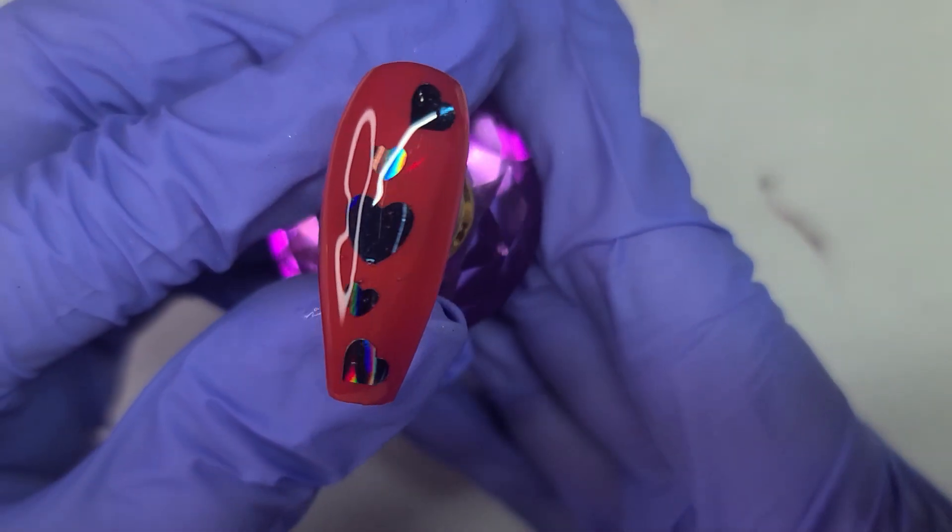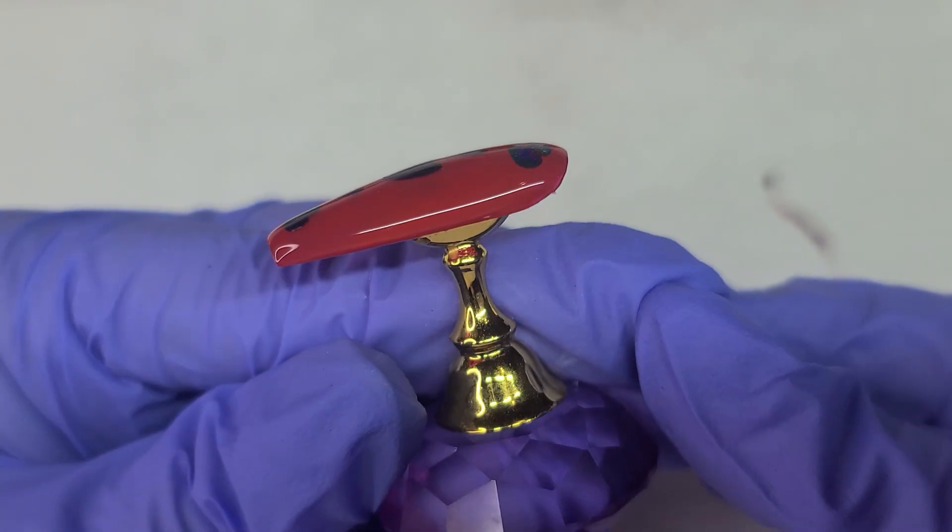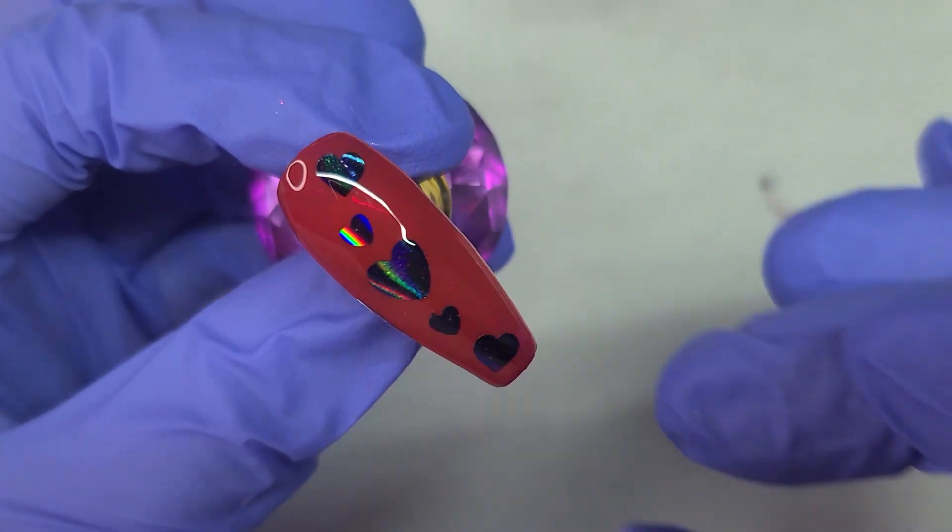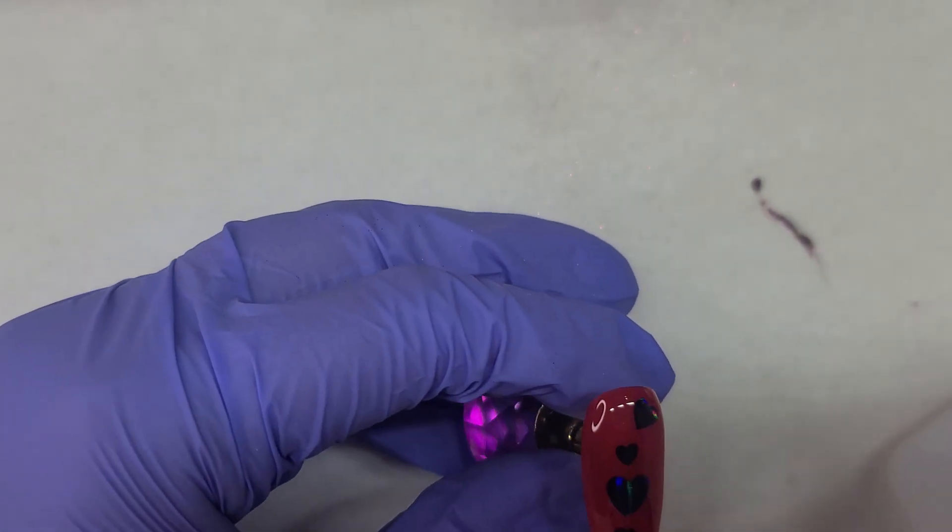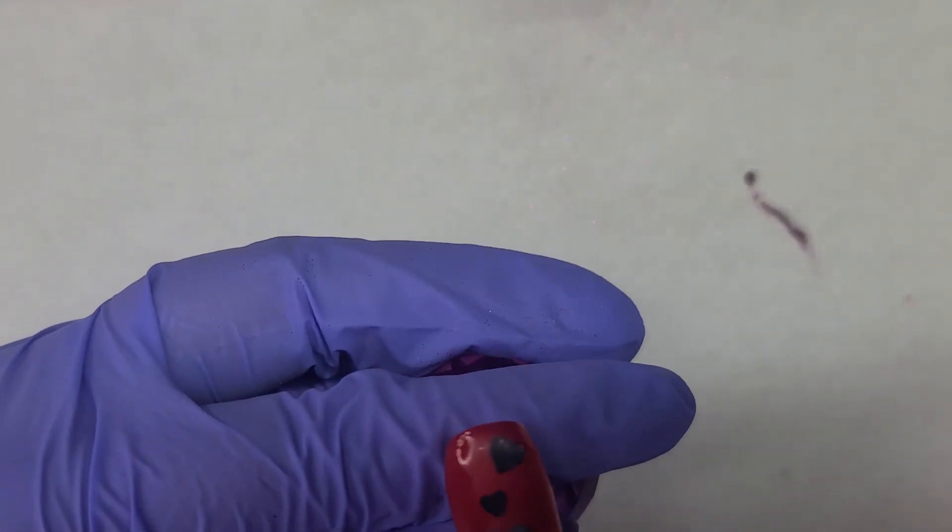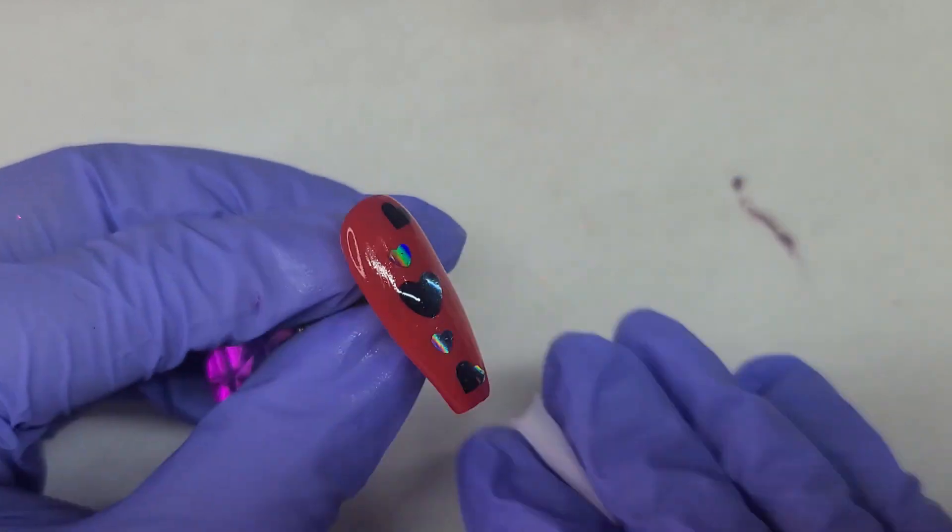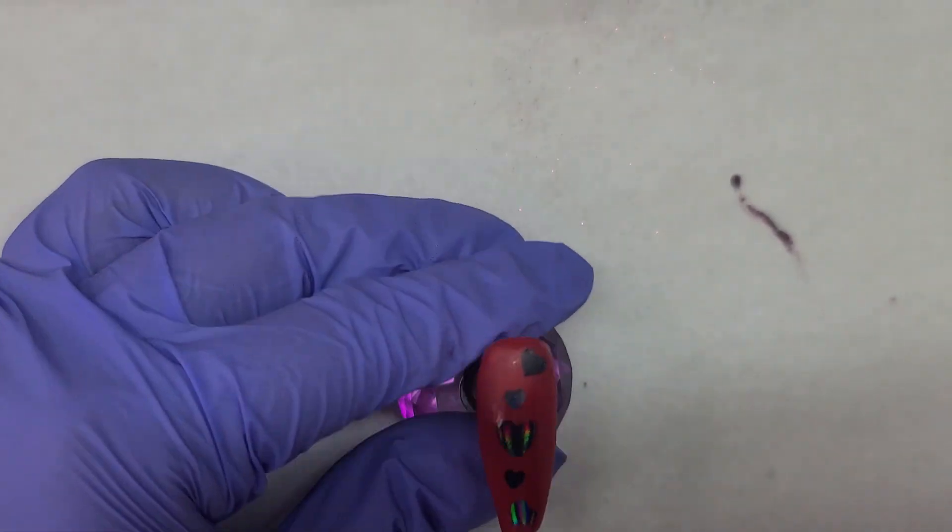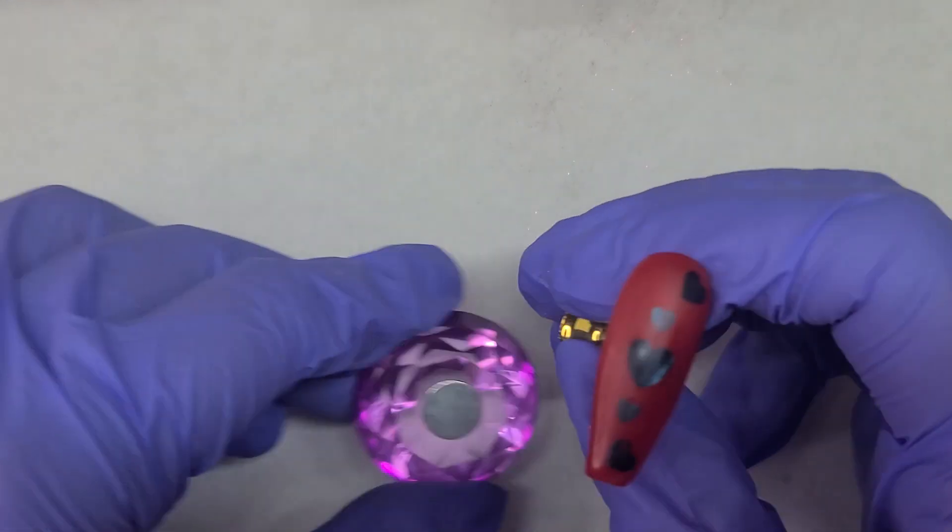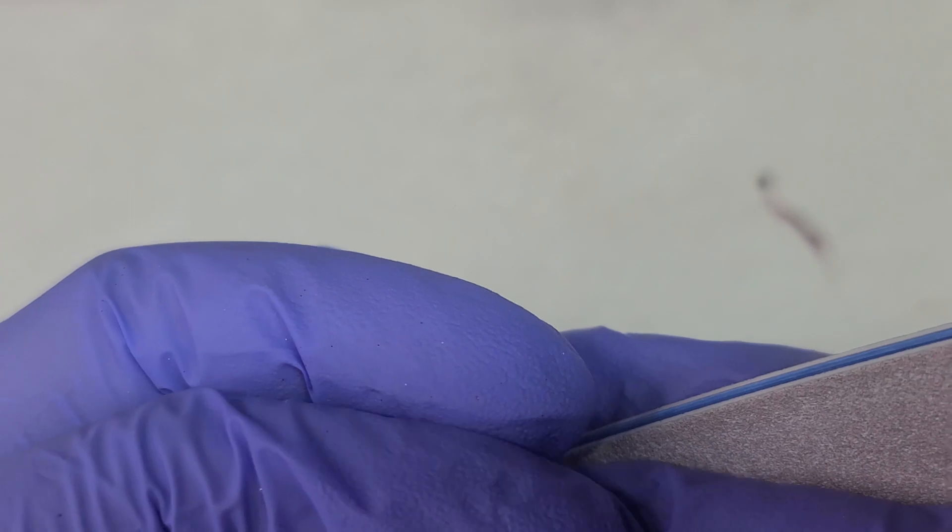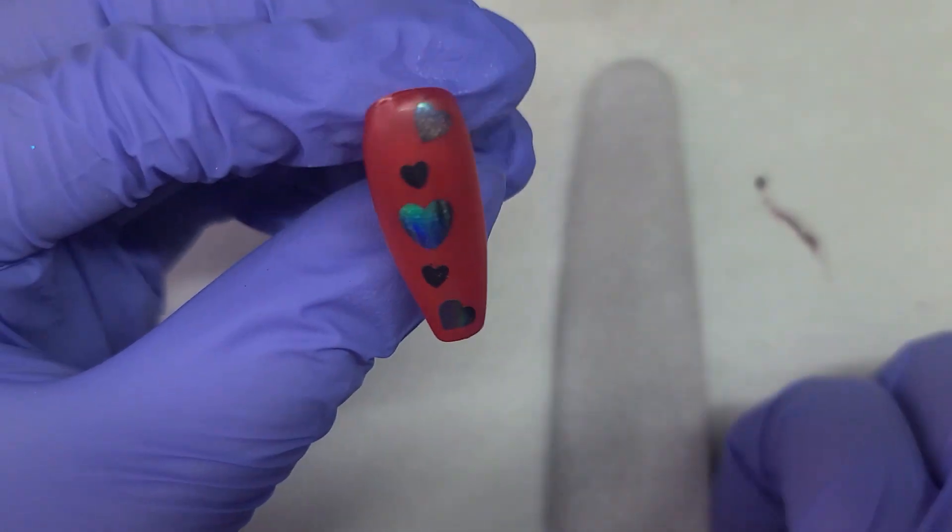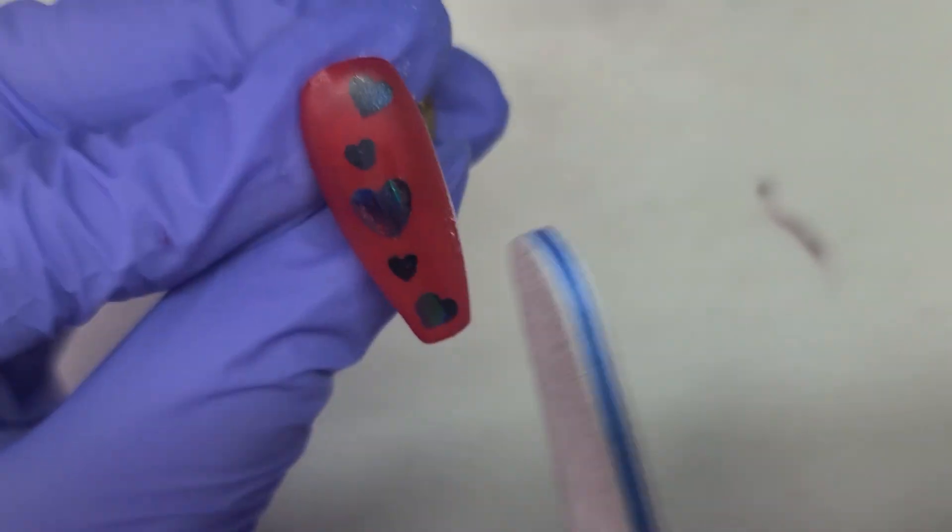And here is our heart nail. Got a nice build. I see we're a little flat on these sides. So I'm going to go ahead and cleanse this with a cleanser. I'm going to get this filed into shape. So you can see that we have a little bit of bulk here and a little bit of bulk here. So we're going to file the edges.